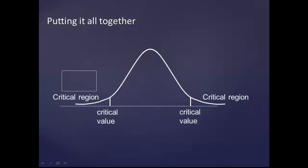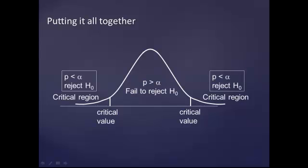So putting this all together, if you are in this critical region, you are going to reject the null hypothesis. Again, the p-value or significance is less than the alpha. Or the critical value is less than the observed t-value that you might have calculated. And in this middle region, if the p is greater than alpha, so the significance is larger than the alpha you selected, you are going to fail to reject the null hypothesis.